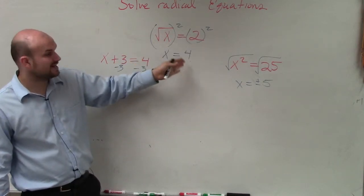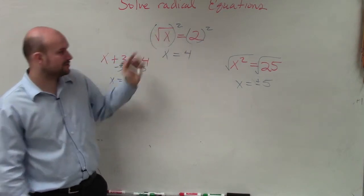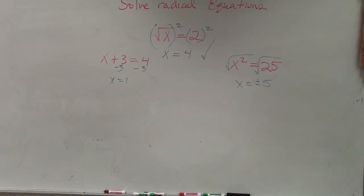We're always going to want to make sure we take our answer, though, and plug it back in. So if we plug 4 in for x, we get square root of 4, which is equal to 2, which checks out. So you're always going to want to go back and check your answer, because we will do a problem that does not have a solution.